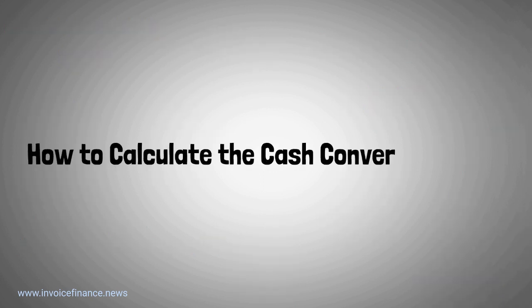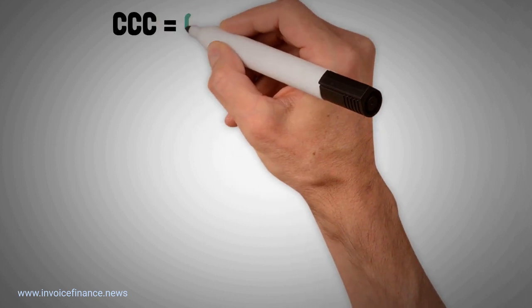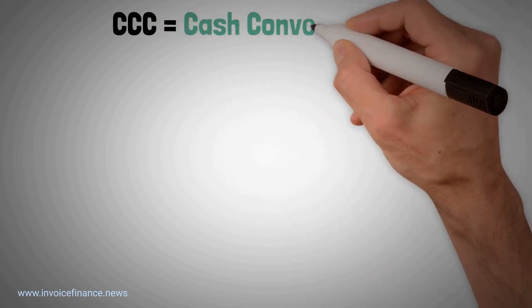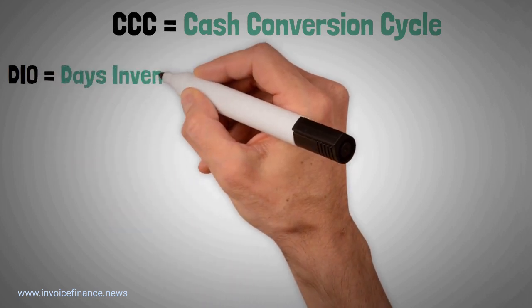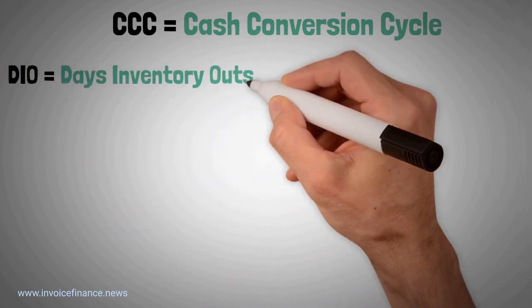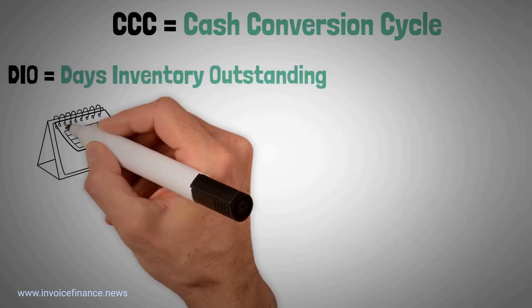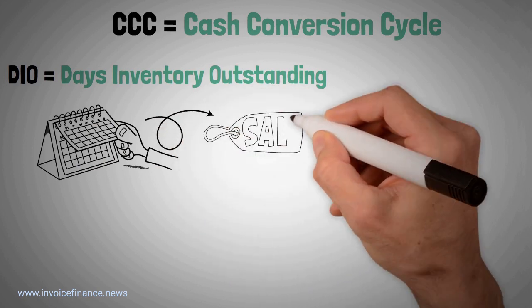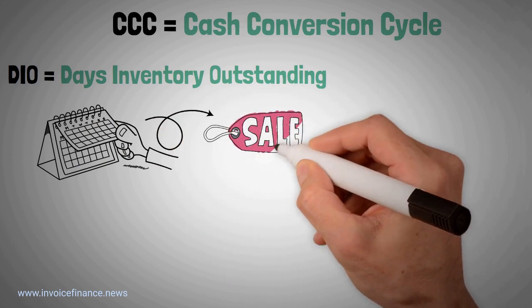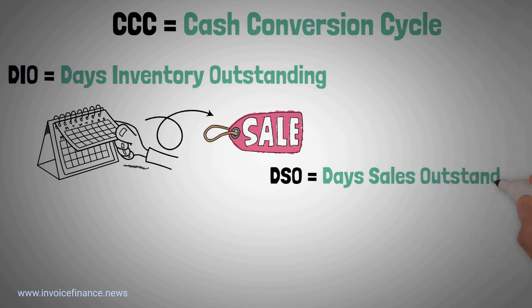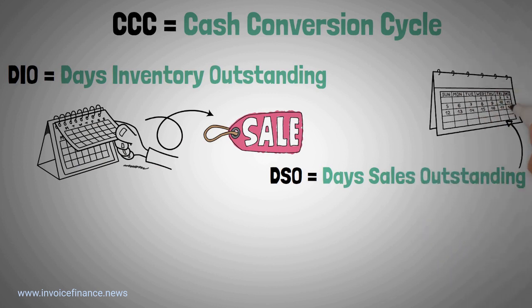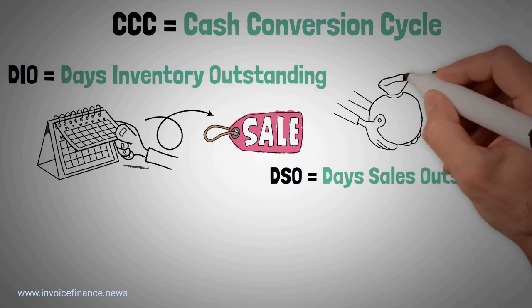How to calculate the cash conversion cycle. First, a note on the terms used. CCC equals cash conversion cycle. DIO equals days inventory outstanding — it measures the average number of days that a company holds inventory prior to a sale. DSO equals days sales outstanding — it measures the number of days, on average, that a company takes to collect its accounts receivable.